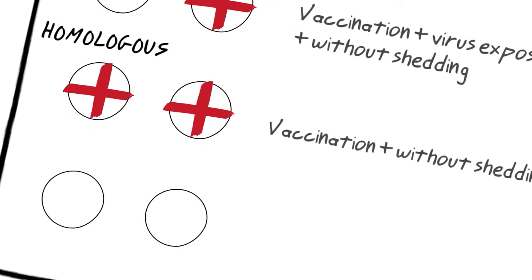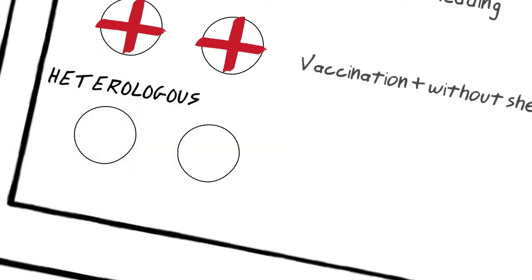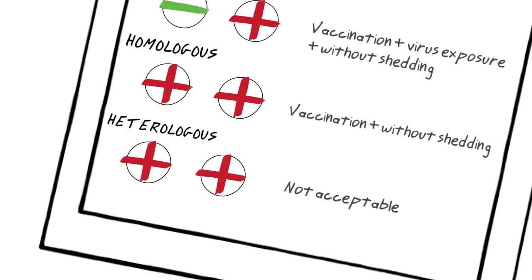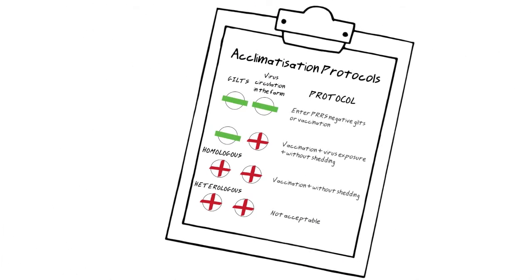In those situations where gilts arrive PERS positive, and we know that they have been in contact with virus that is different from the strain present in the farm, we have to avoid the entrance of these animals. In this kind of situation, there is a high risk of introducing a new strain in the farm, and this could provoke a destabilization of the breeding herd.